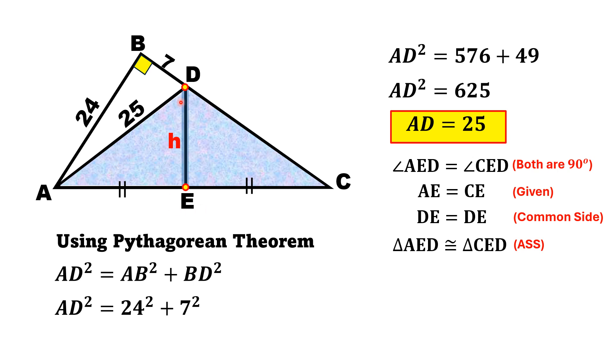Thus, according to the congruency of the triangles, hypotenuse equals hypotenuse. Since AD length is 25, CD length is also 25.